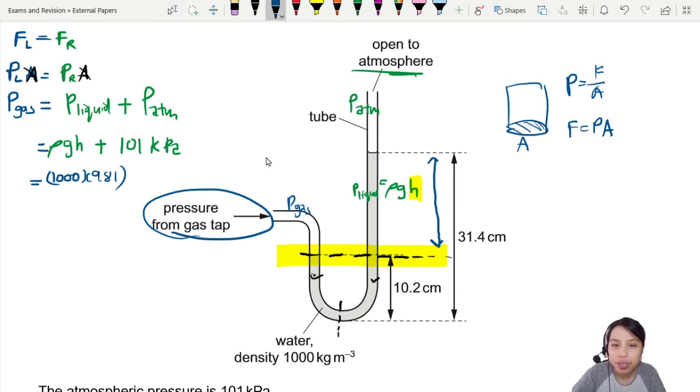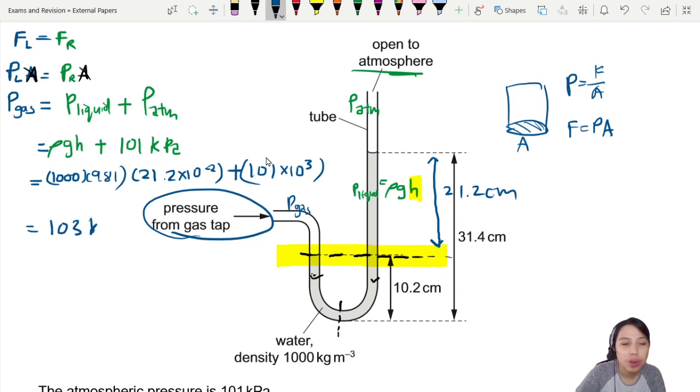Looks like it's going to be 21.2 cm, so plug that in here: 21.2, must convert to meters. Lastly, your 101 kilopascal convert to SI unit, so times 10³ pascal.